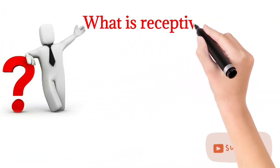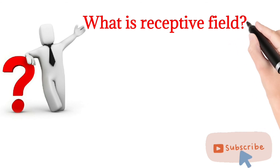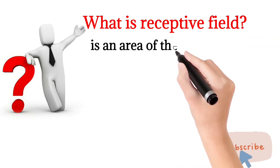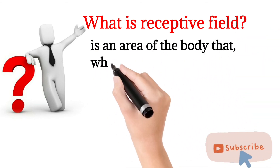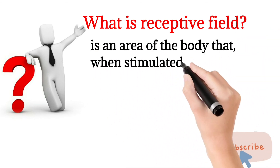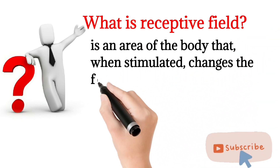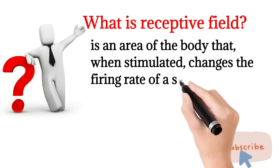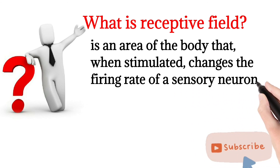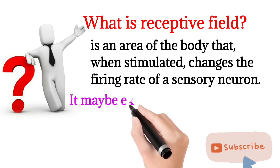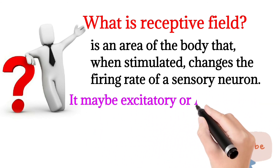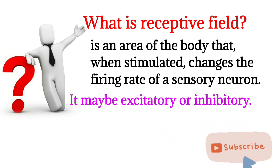Then we will talk about receptive field. What is a receptive field? It is an area of the body that, when stimulated, changes the firing rate of a sensory neuron. It may be excitatory or inhibitory.